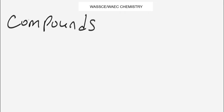So what is a compound? A compound in chemistry is simply a chemical combination of two or more elements. Two or more elements combine chemically to give a compound, or you can say that atoms join together to make a compound.